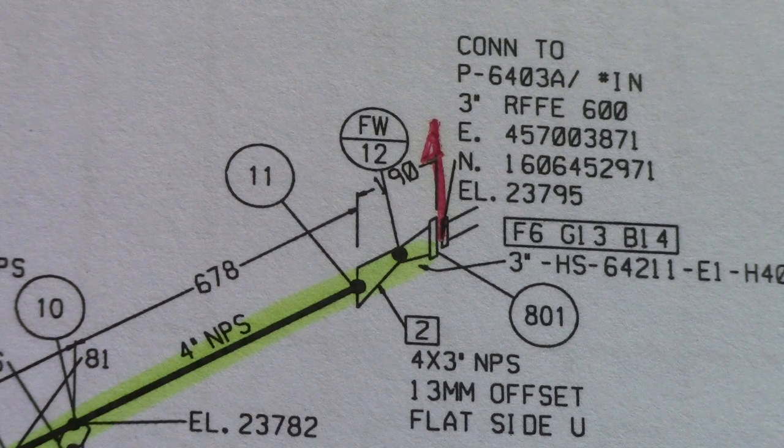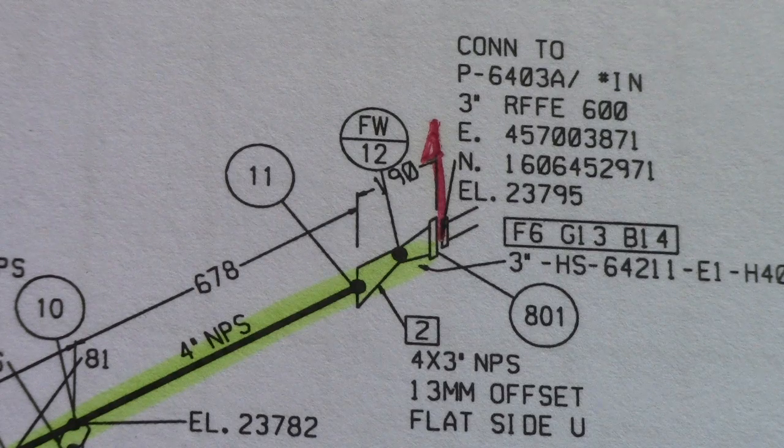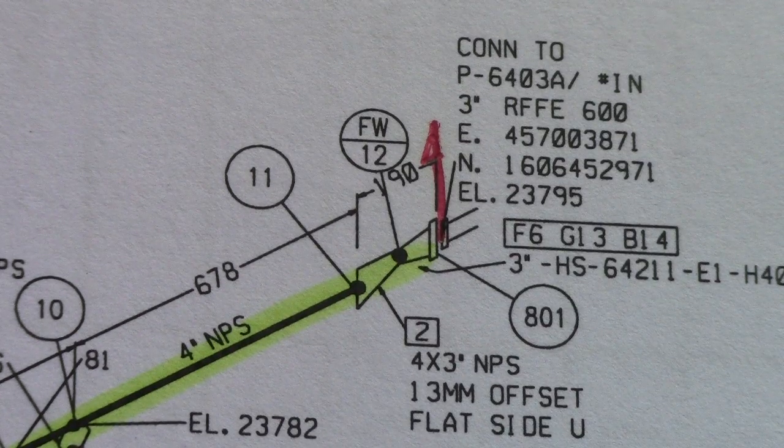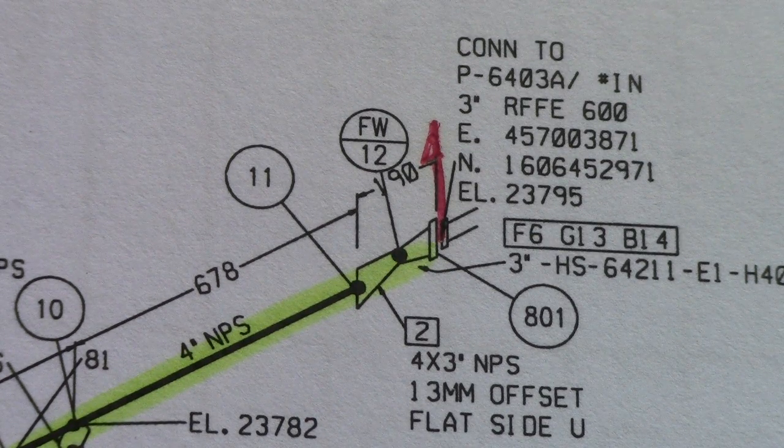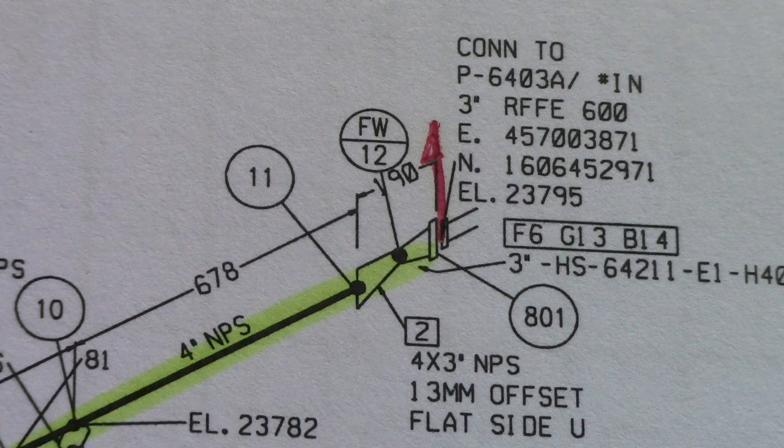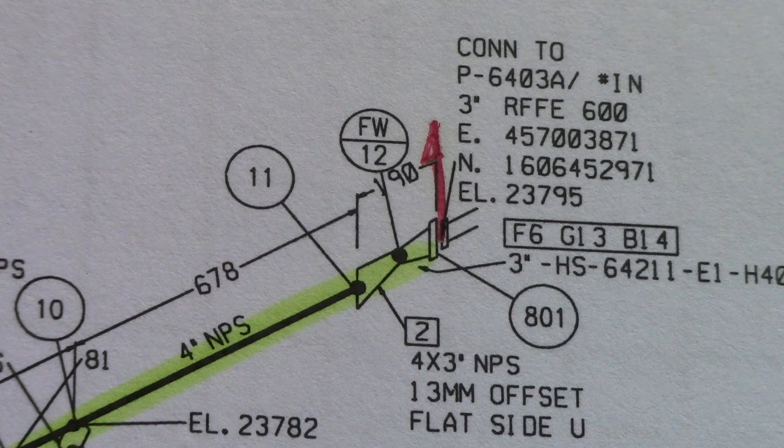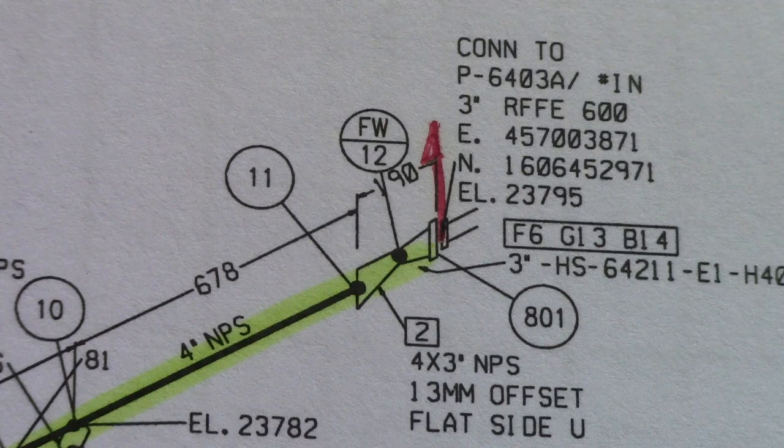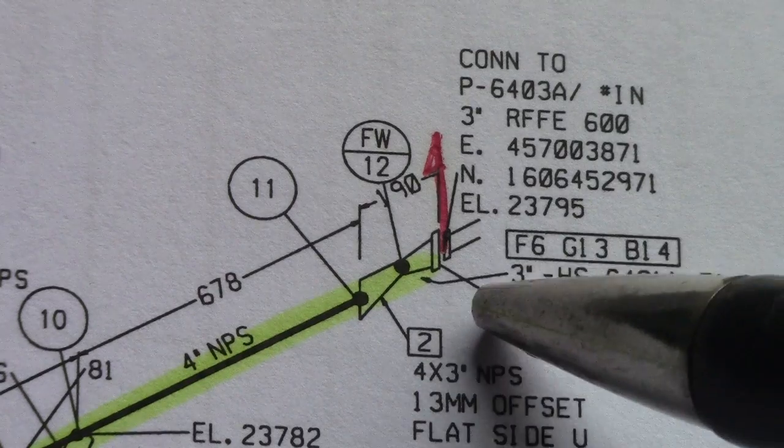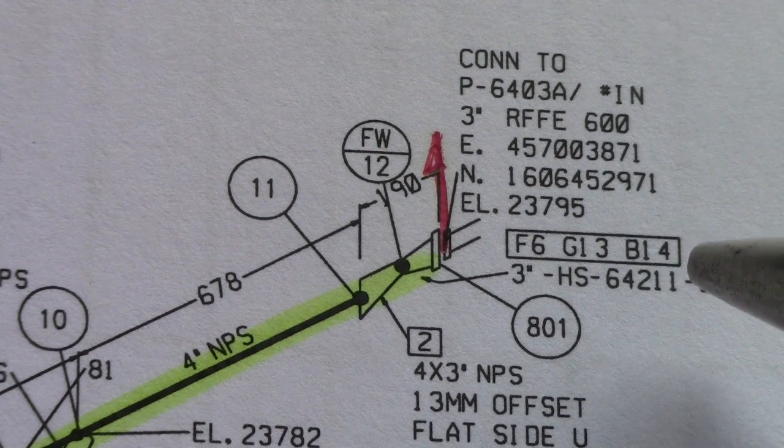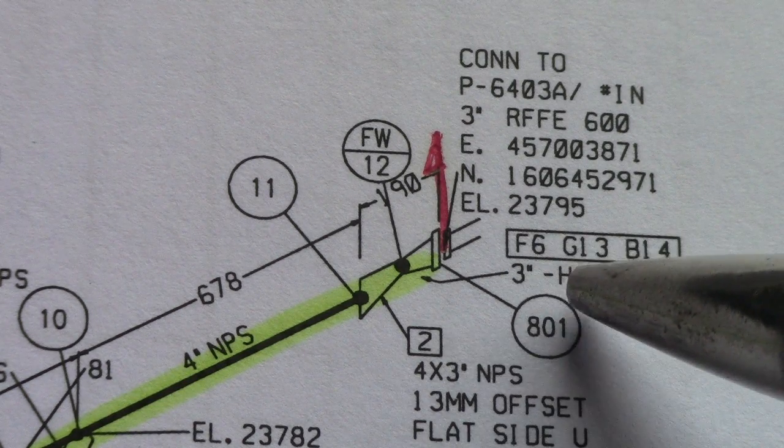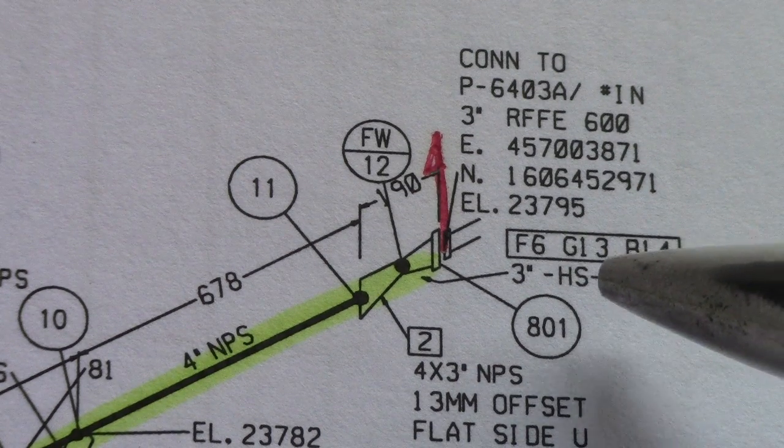In this isometric drawing we have F6, G13, B14. This is flanges, gaskets, and bolts. You must check also all these in the isometric, one by one - check the gasket, check the bolts.